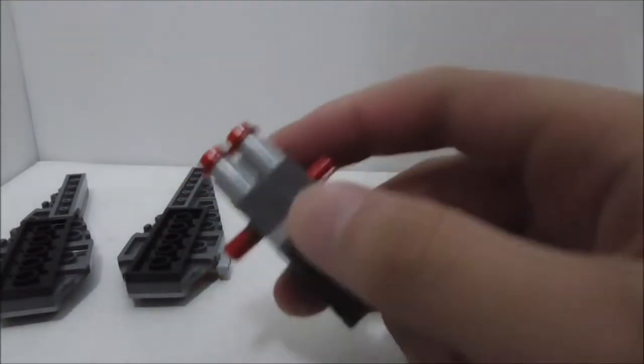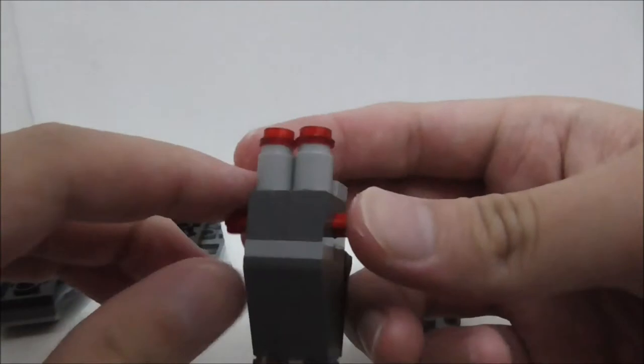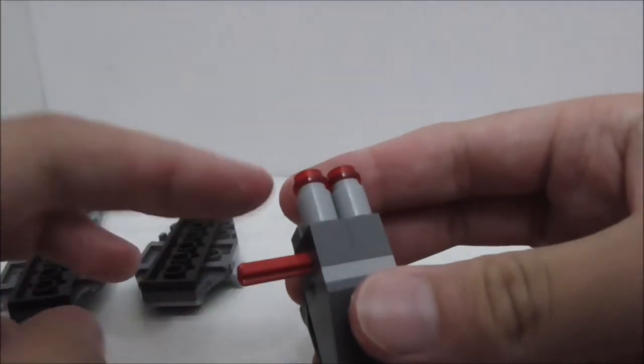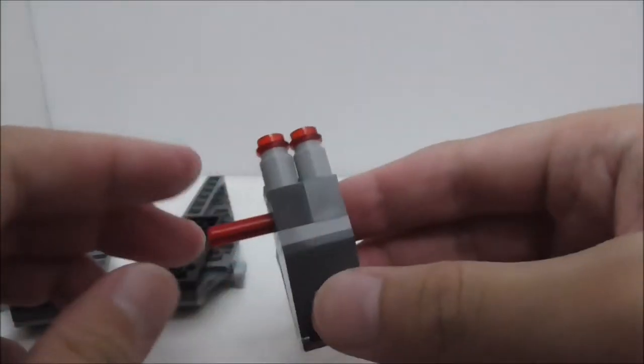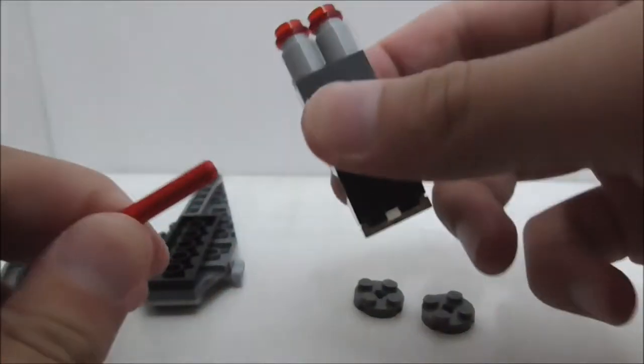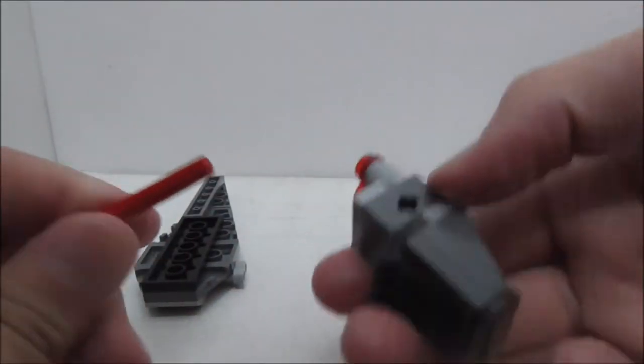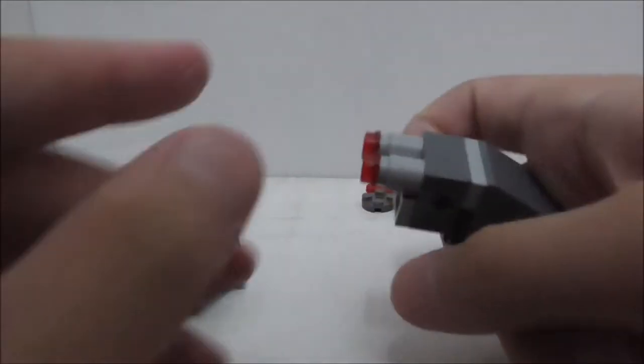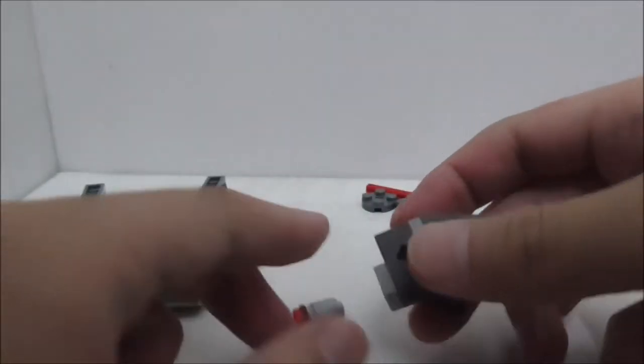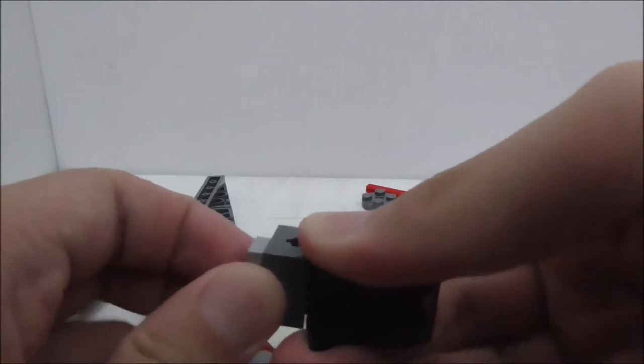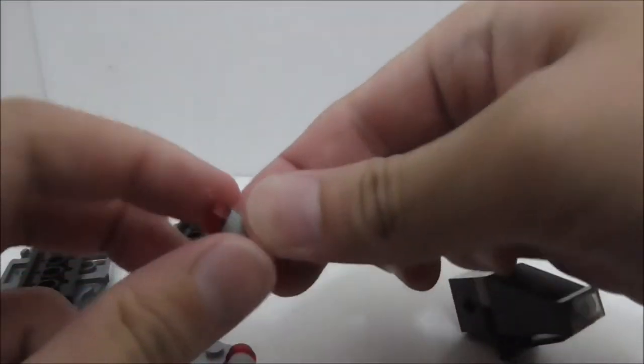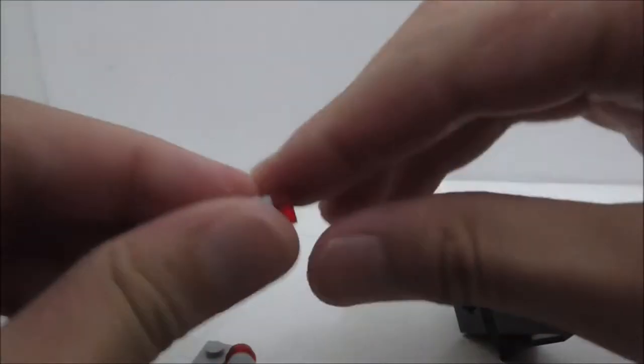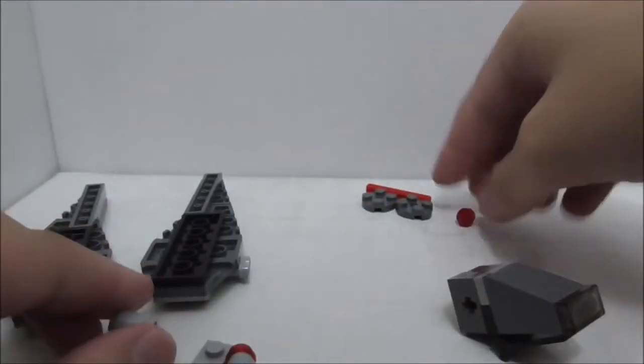The second step is to remove this red Technic piece. Just remove it simply. These are all the pieces that you don't need and you also remove all these. Except for all these, the red studs you can also remove them.